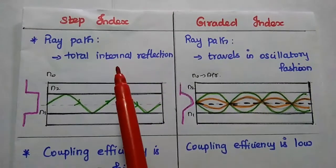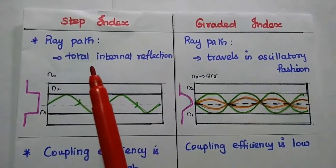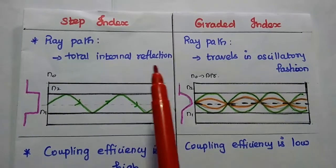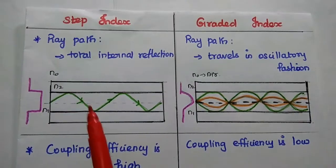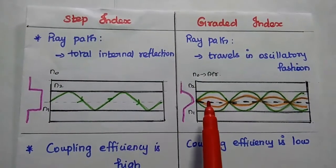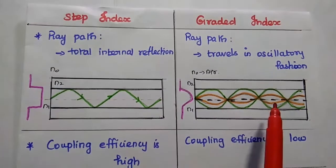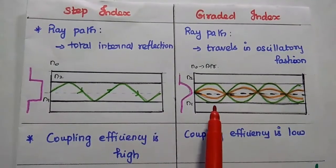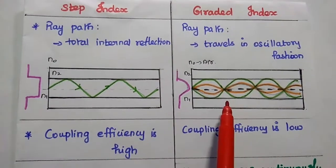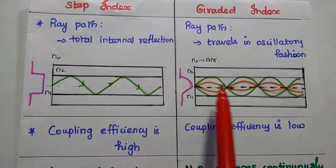In this step index, the ray path is due to only the total internal reflection. It gives only one light path. But in this graded index, it travels in oscillatory fashion. That means it has more number of light paths. Multiple paths are available.